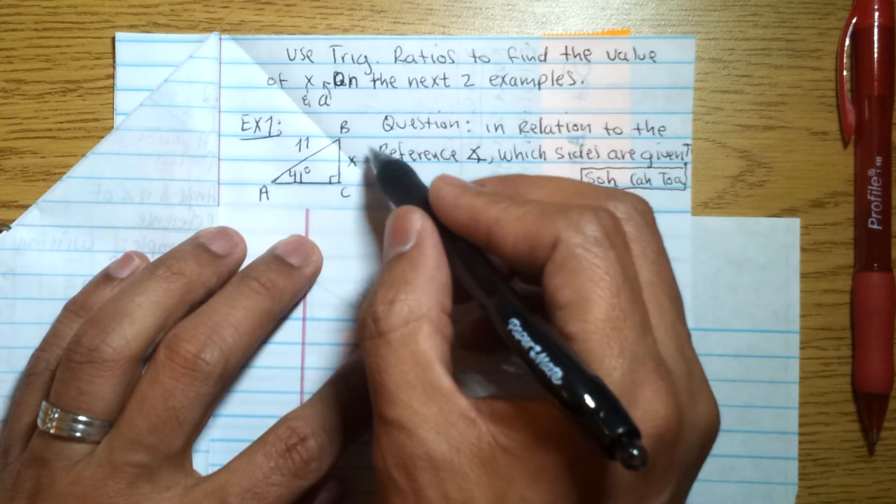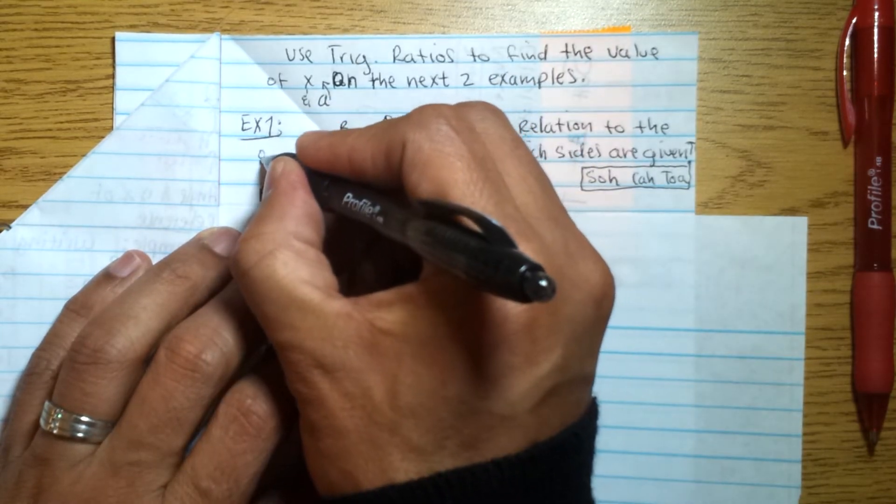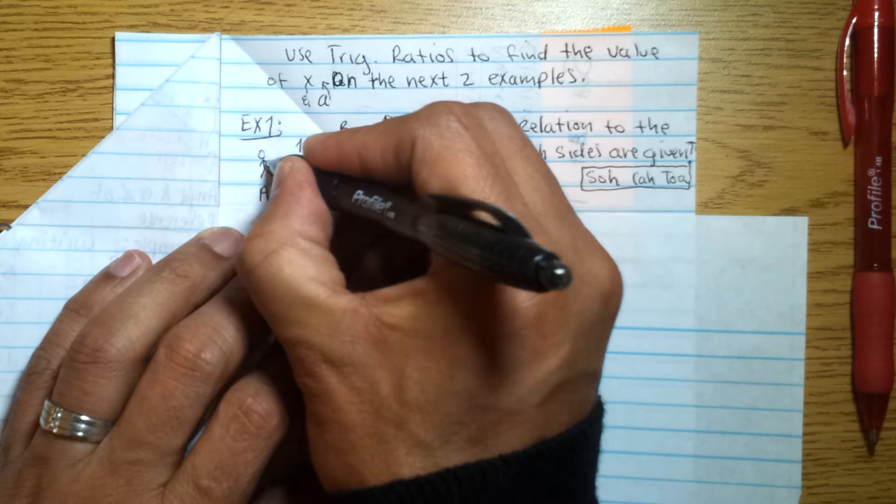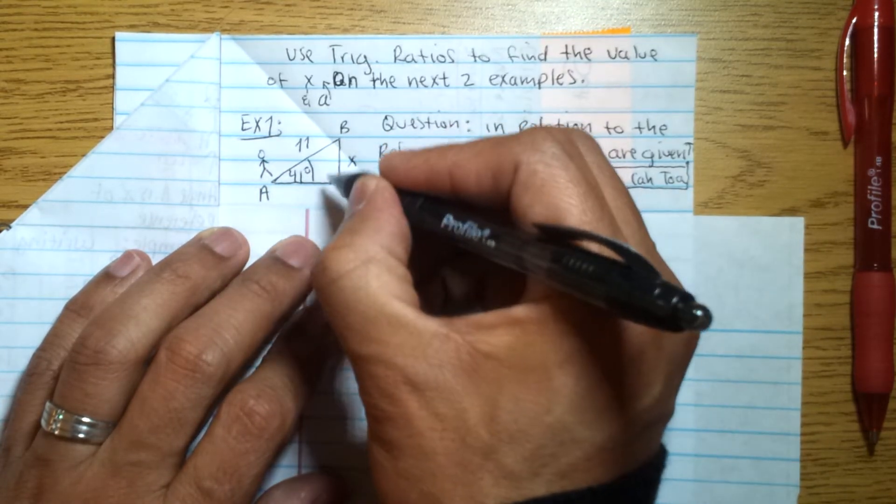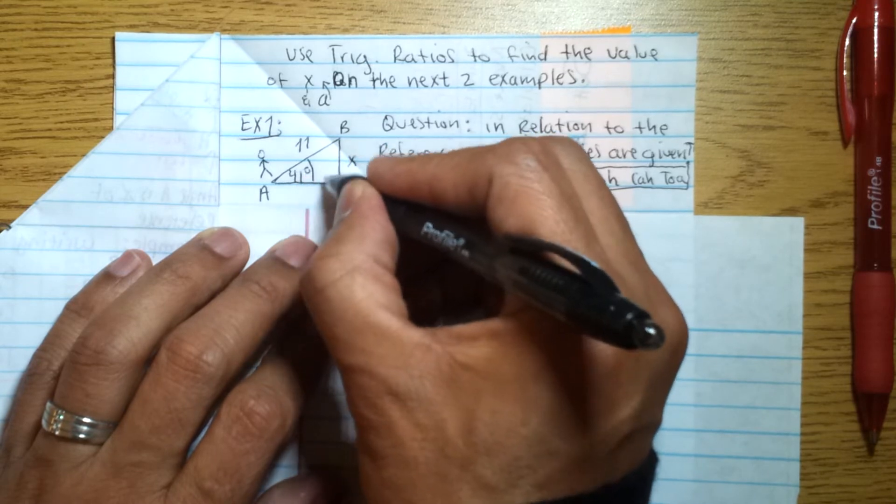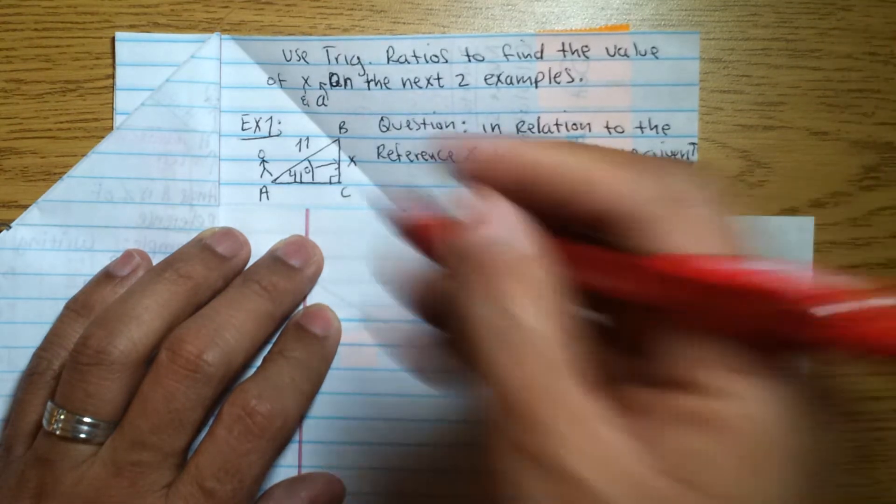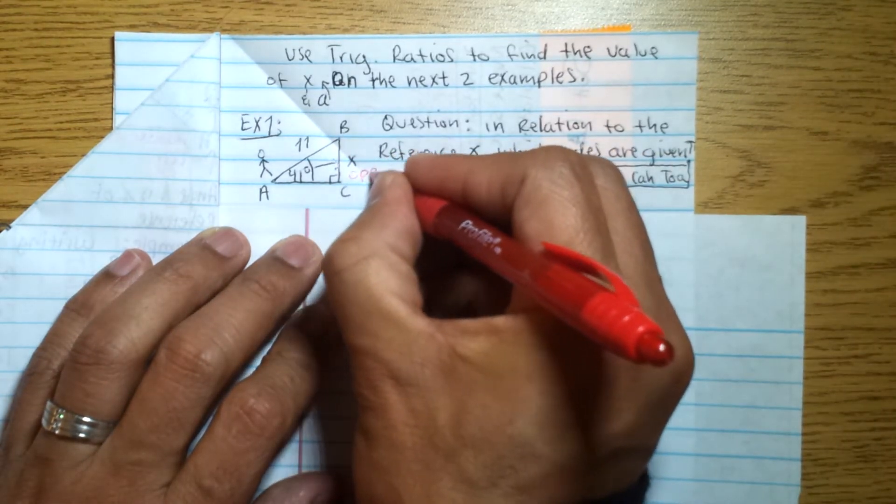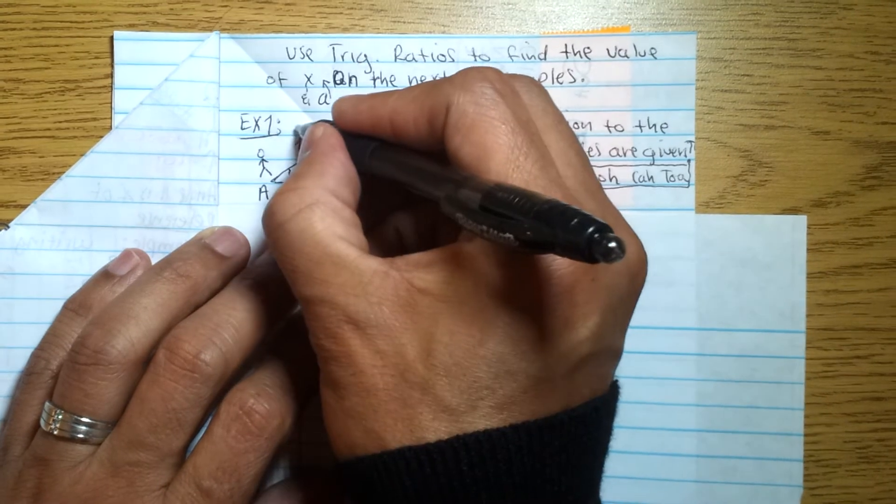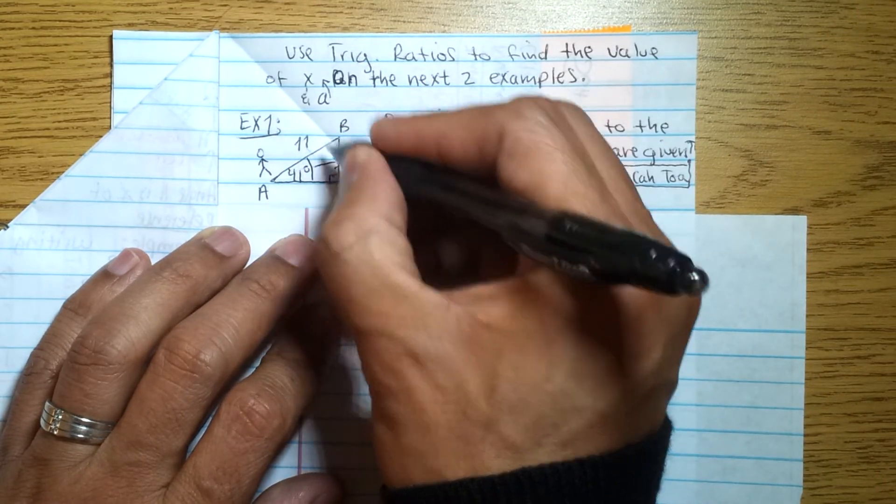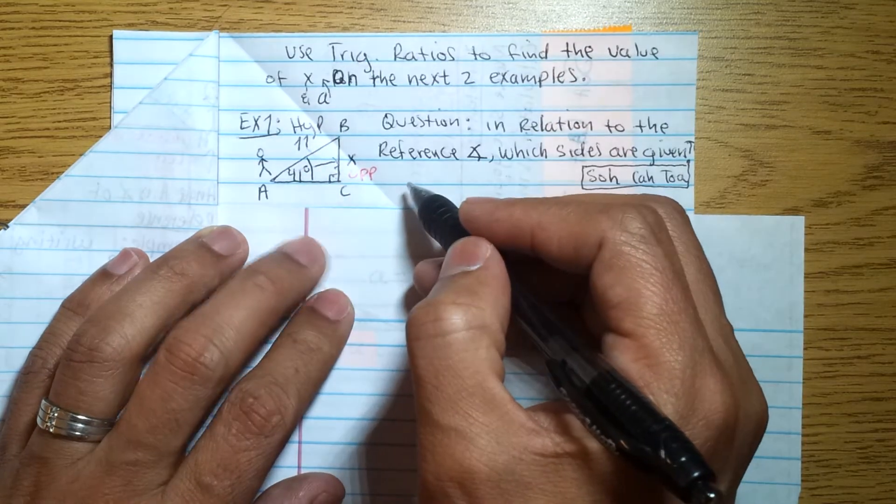The first thing we need to notice is what are we given in relation to the angle. This is the angle of reference, so we're looking at this triangle from angle A. The angle we're given is angle A, and the measure of angle A is 41. So in relation to this angle, we can see that X is the opposite side, and this one here is opposite to the hypotenuse. This side is opposite to the right angle, so this is the hypotenuse. So we know we have the hypotenuse and the opposite side.